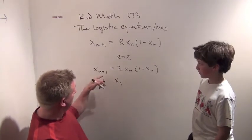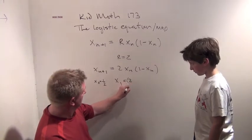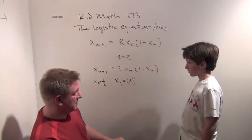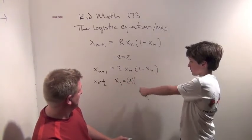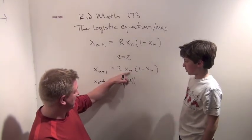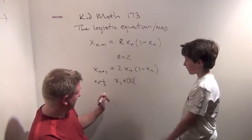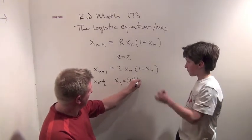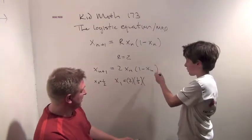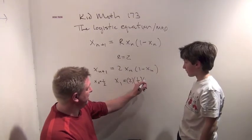Let's put in x sub n equals 1 half. Start at x0 equals 1 half. This says x1 equals 2 times x0. What's x0 equal to? It's 1 half.